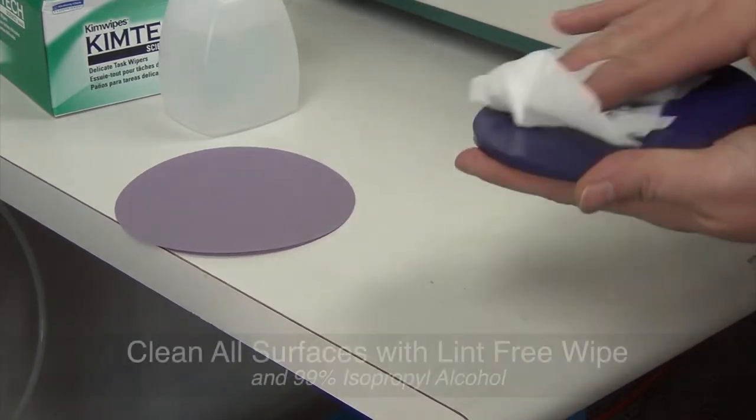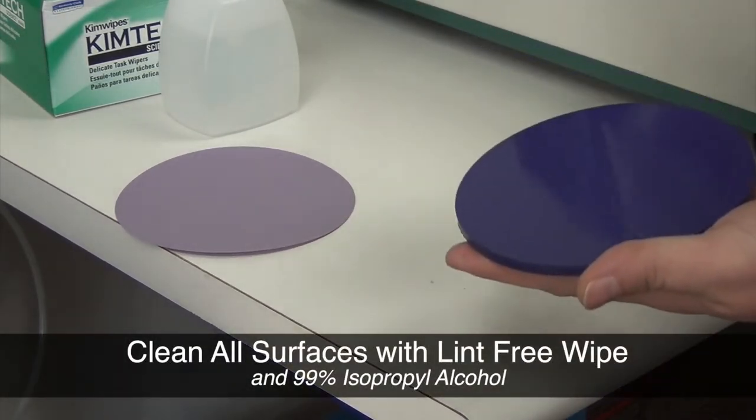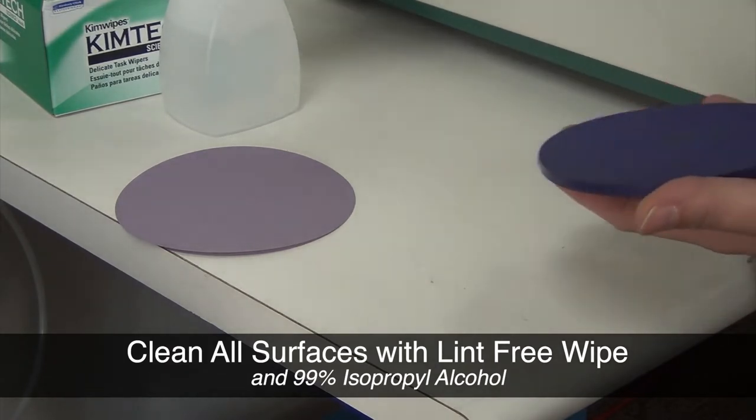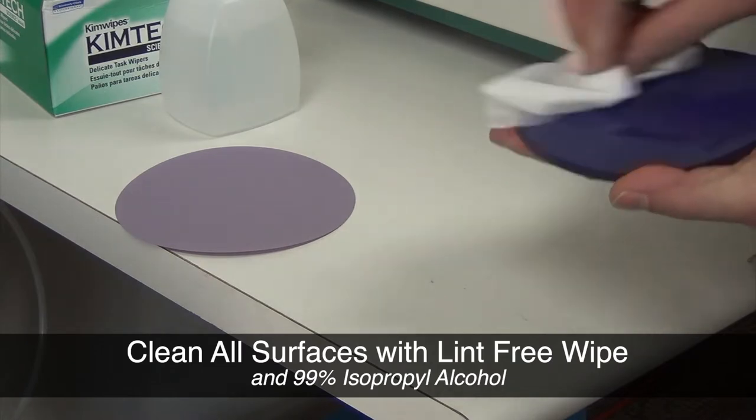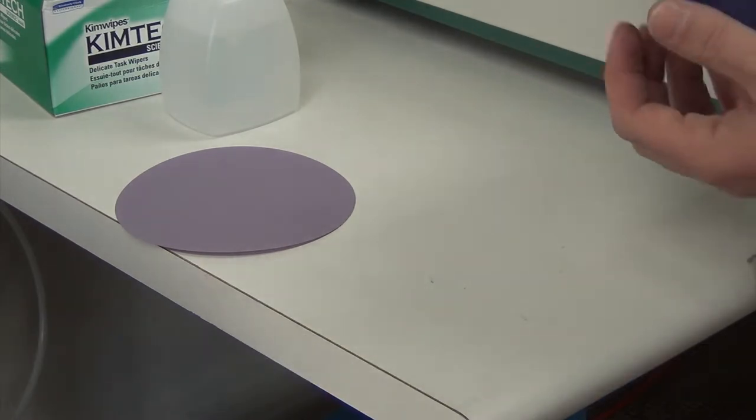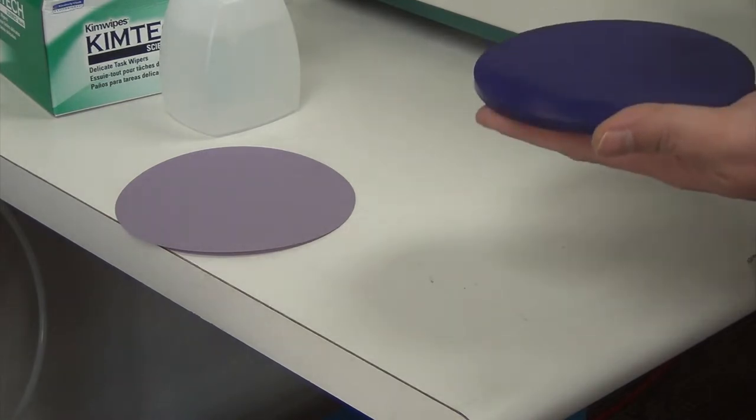Make sure that all surfaces are clean. Starting with the top of the polishing pad, clean it with a lab wipe or Kim wipe and high purity isopropyl alcohol. Clean both surfaces. This will help maintain perpendicularity throughout its placement on the platen and as the film is placed on top.